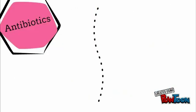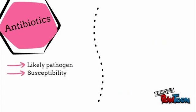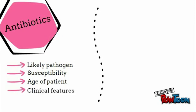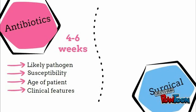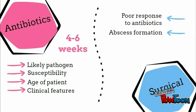The empiric antibiotic of choice will vary according to the likely pathogen, the susceptibility of the organism, age of the patient, and clinical features. Patients diagnosed with osteomyelitis are usually started on empiric antibiotics for 4-6 weeks. Although management is primarily medical, there are three main indications for surgical management: if the infection fails to respond to antibiotics within the first 48-72 hours, if there are subperiosteal and soft tissue abscesses present, and if devitalised bone needs to be excised and debrided.